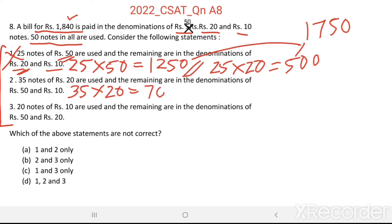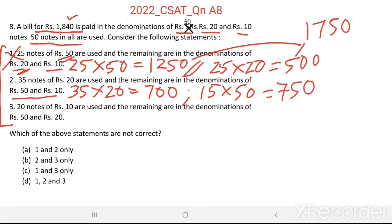Now see the second statement. 35 notes of Rs. 20 are used. 35 into 20 gives Rs. 700. The remaining are in the denominations of Rs. 50 and Rs. 10. Here, we can use 15 notes; suppose all these 15 notes are Rs. 50 notes, then we get Rs. 750. Adding these two, we get Rs. 1450, which is less than Rs. 1840. Therefore, the second statement is also wrong.